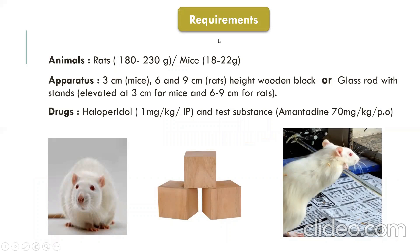Now, what are the requirements for this test? This experiment can be carried out in rats as well as mice. For mice, you use wooden blocks at three centimeters height; for rats, six and nine centimeters. Similarly, a glass rod can be elevated at three centimeters for mice and six or nine centimeters for rats. Haloperidol is used as the antipsychotic drug — at a high dose of one mg per kg intraperitoneally in the rat — to produce catalepsy behavior. The test substance, such as amantadine 70 mg per kg per orally, or any test drug, is administered to the animal before administration of haloperidol.